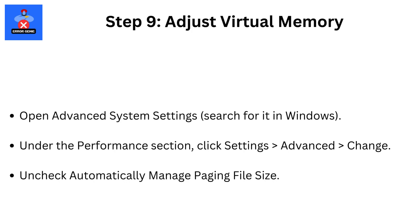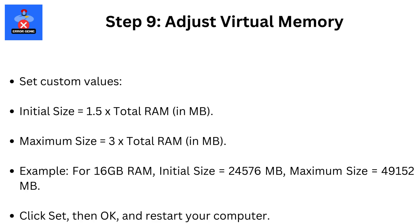Step 9: Adjust Virtual Memory. Open Advanced System Settings — search for it in Windows. Under the Performance section, click Settings, then Advanced, then Change. Uncheck Automatically Manage Paging File Size and set custom values: Initial Size equals 1.5 times your total RAM in megabytes; Maximum Size equals 3 times your total RAM in megabytes. For example, for 16GB RAM: Initial Size = 24,576MB, Maximum Size = 49,152MB. Click Set, then OK, and restart your computer.